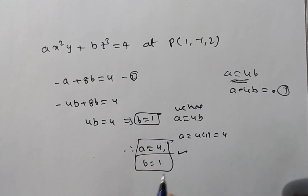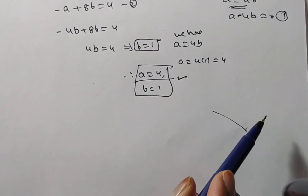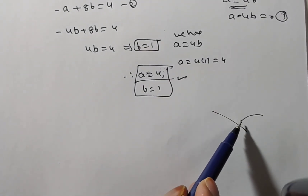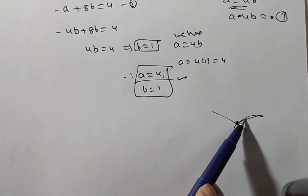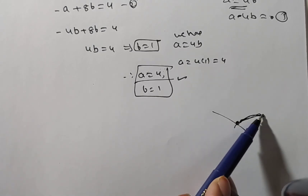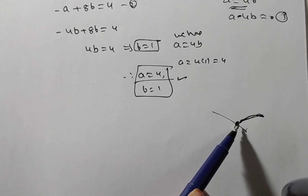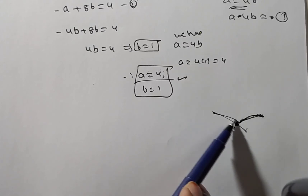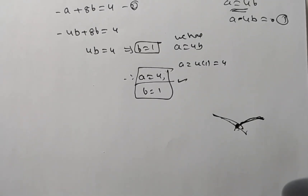These are the required values. To summarize: two surfaces intersecting at one point cut orthogonally, and we found the constants for the second surface using the orthogonality condition N1 · N2 = 0 and the fact that the point satisfies the second surface equation. Thank you for watching this video.